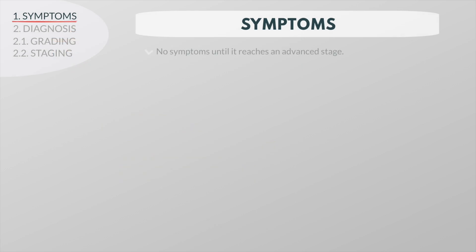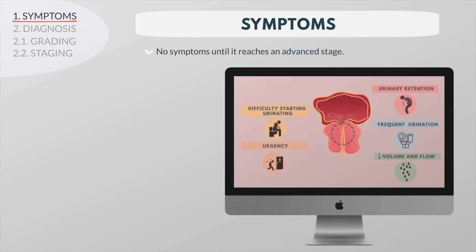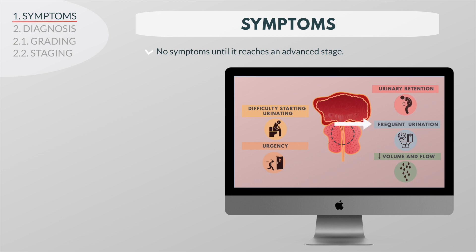Prostate cancer usually causes no symptoms until it reaches an advanced stage. Sometimes, symptoms similar to those of benign prostatic hyperplasia develop, including difficulty urinating and a need to urinate frequently or urgently. But these symptoms do not develop until after the cancer grows large enough to compress the urethra and partially block the flow of urine.